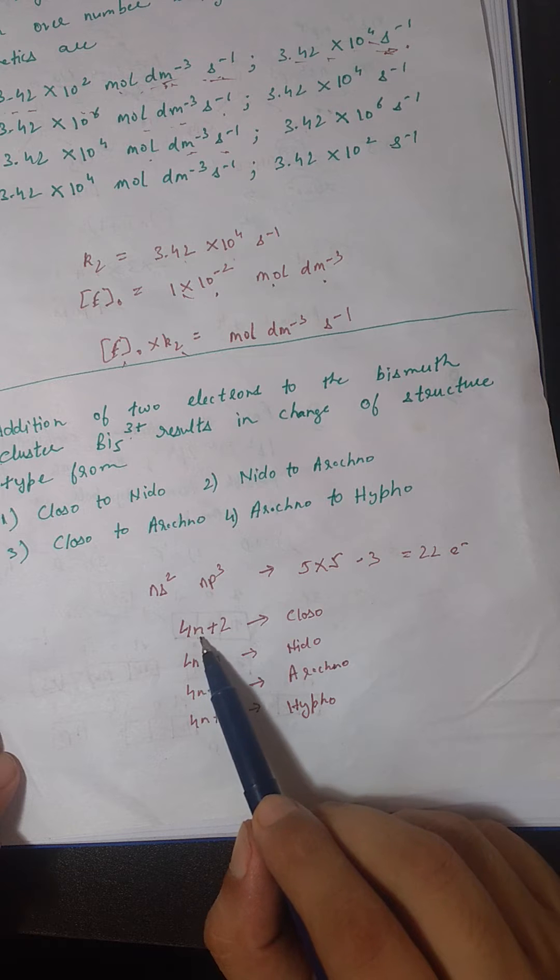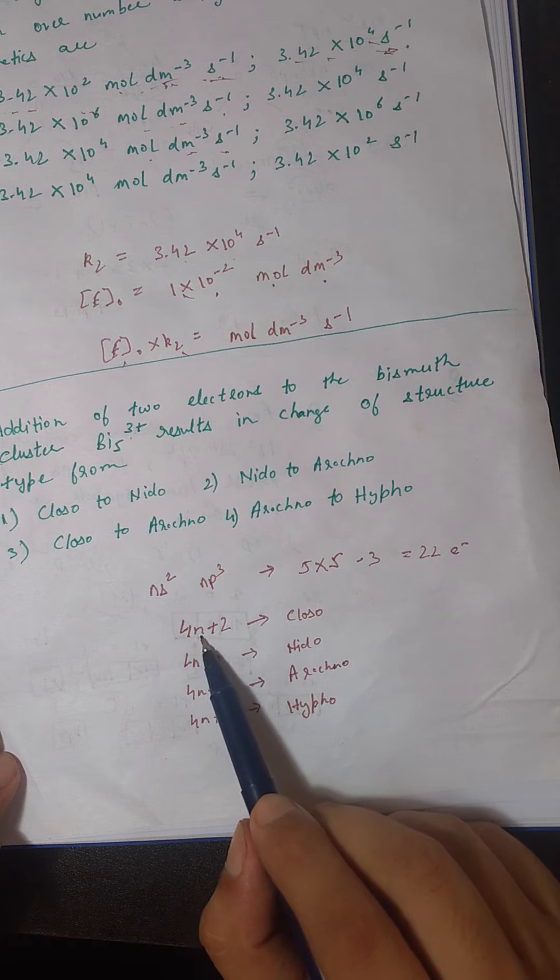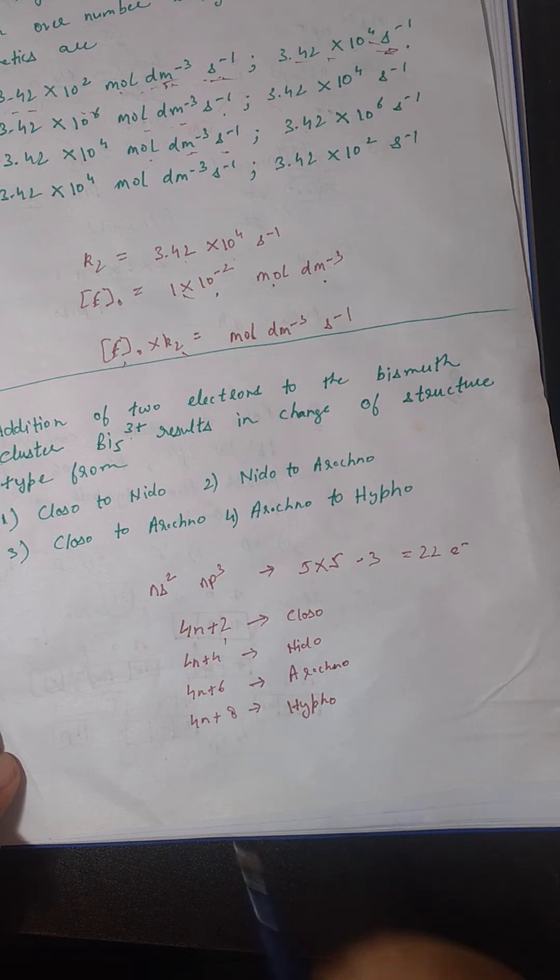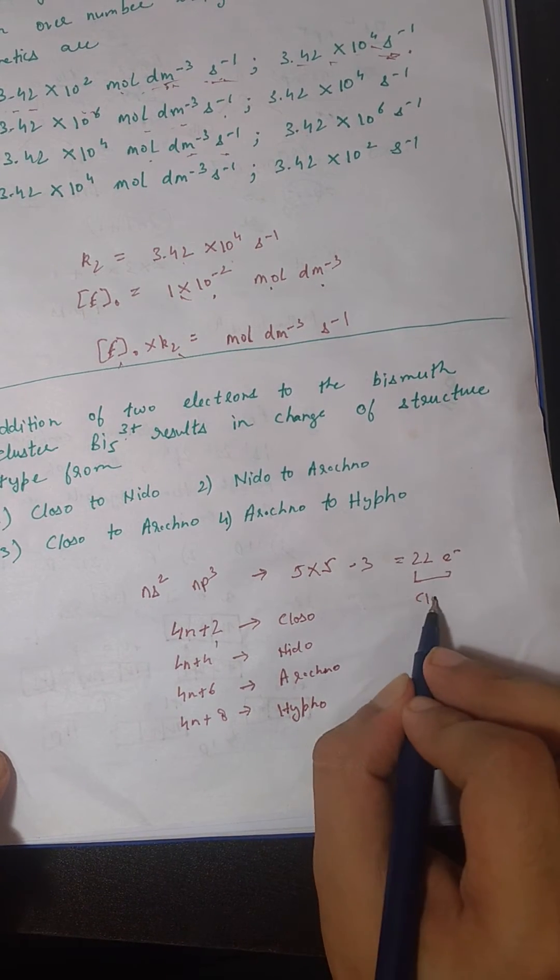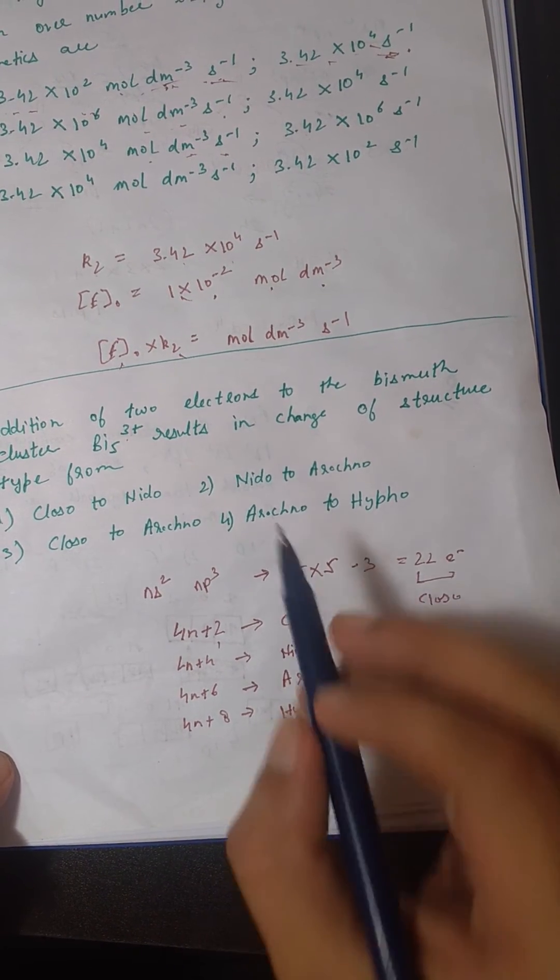If we put n as 5, so 4 times 5 is 20 plus 2 equals 22. That means the original structure of Bi5³⁺ is closo.